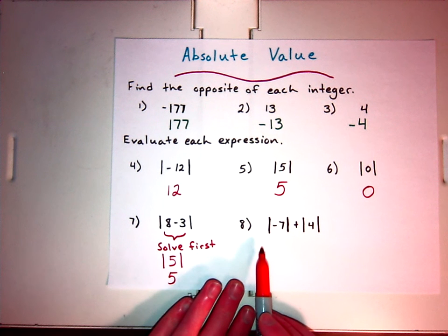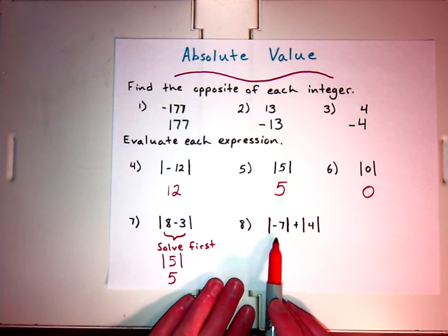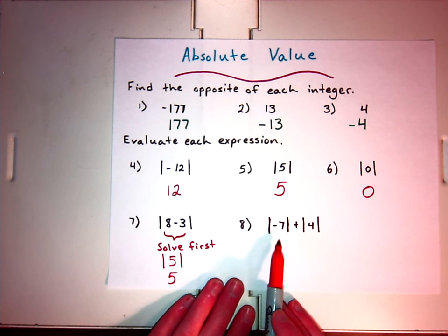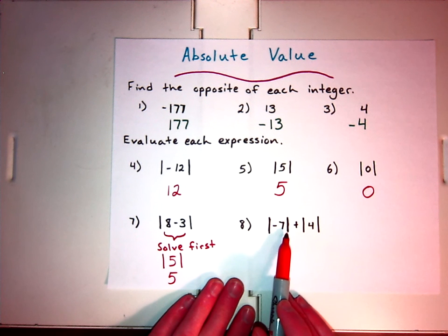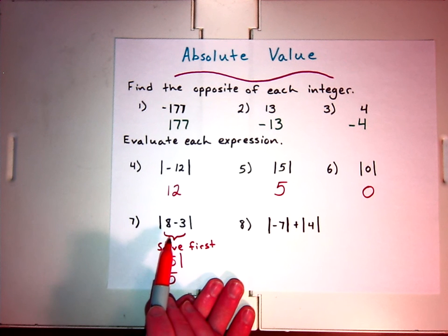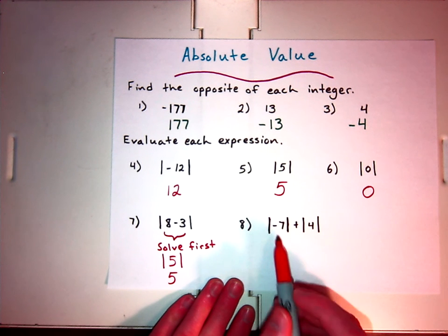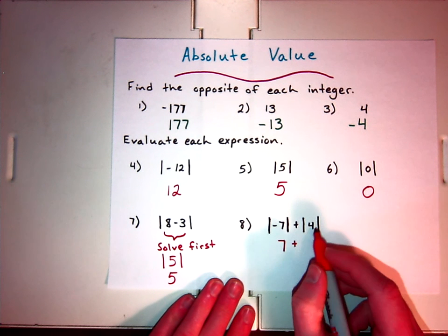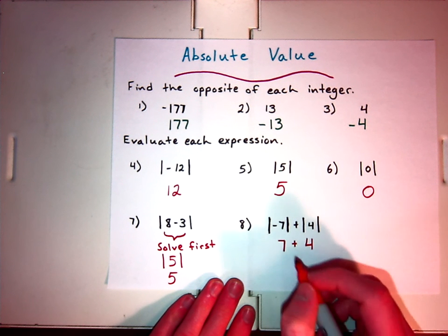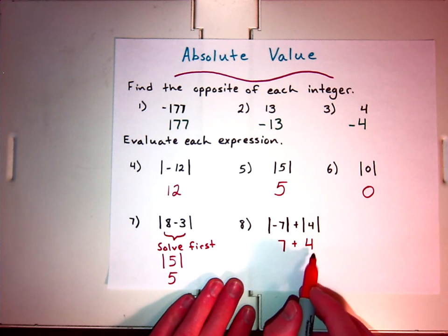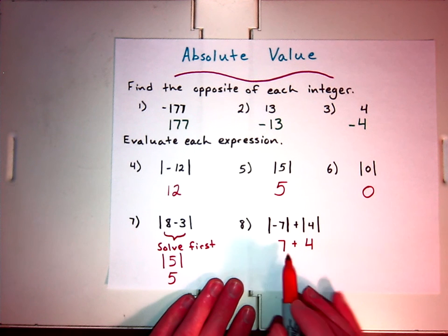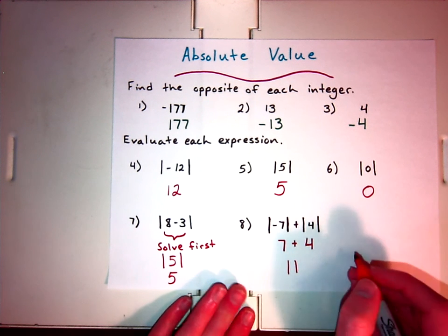For number 8, the expression is not within a single set of absolute value signs — there are two separate absolute value problems. We have the absolute value of negative 7, and there's nothing to solve inside it, so the absolute value of negative 7 is positive 7. Then we bring down the plus sign. And then we have the absolute value of 4, which is 4. I don't write absolute value signs at this step because I've already solved them — there was nothing else inside them to solve first. So 7 plus 4 equals 11, and that's our answer.